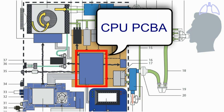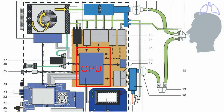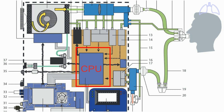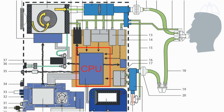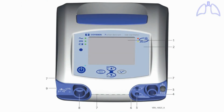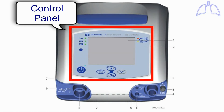The CPU PCBA controls all processes of the ventilator. The CPU runs a software program that receives two types of inputs. The first type of inputs is the electric signals received from the sensors. The second type of inputs is the data received from the control panel.